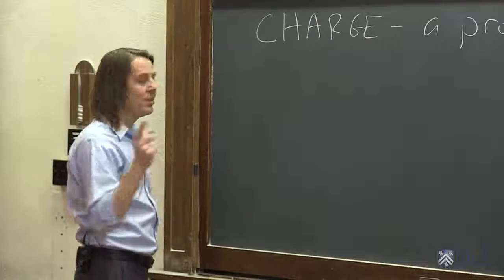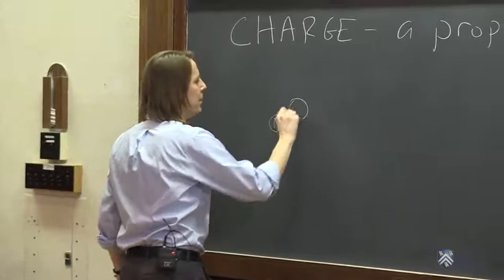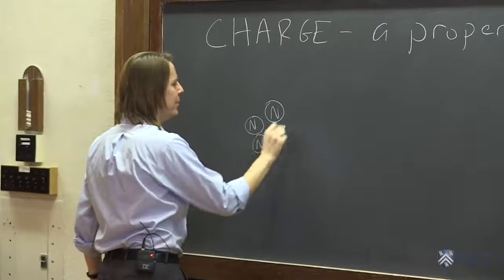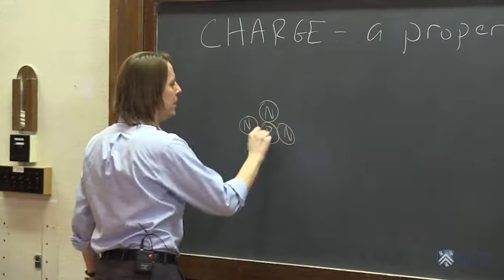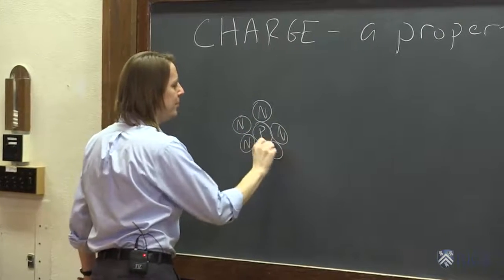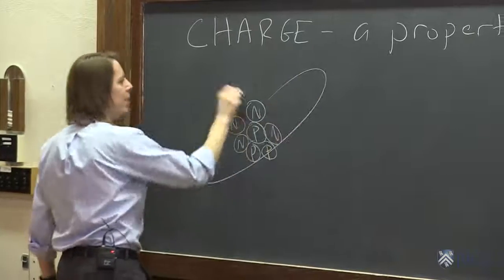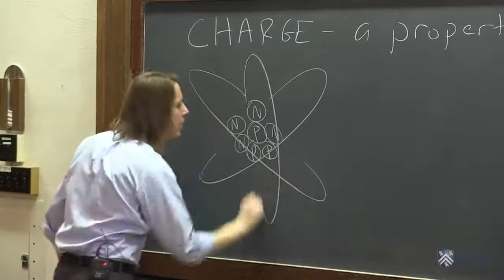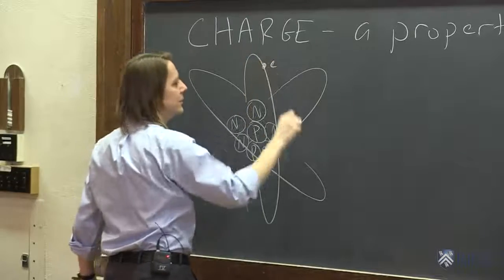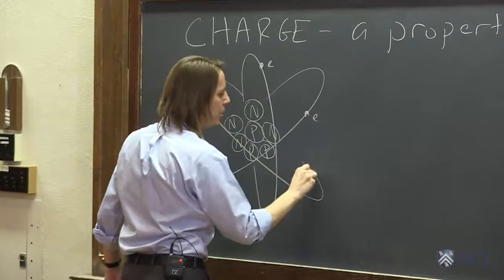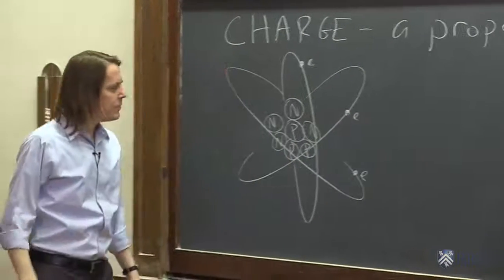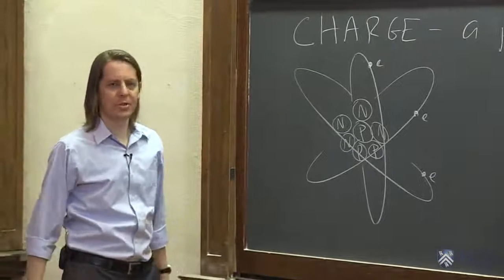So we're going to look at the deepest level. We're going to draw one of these. Here's some circles with Ns in them. And then here's some circles with Ps in them. And then flying around are some Es. So you know that this is an atom.